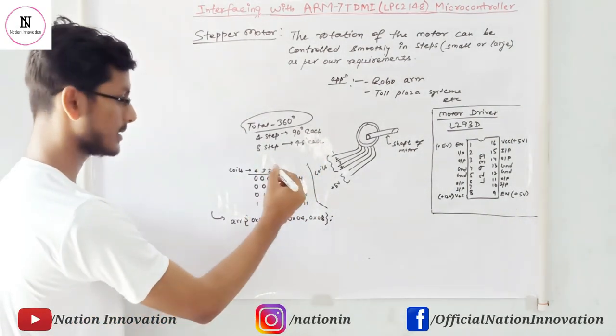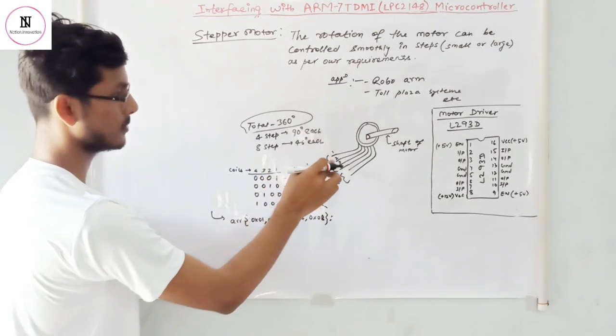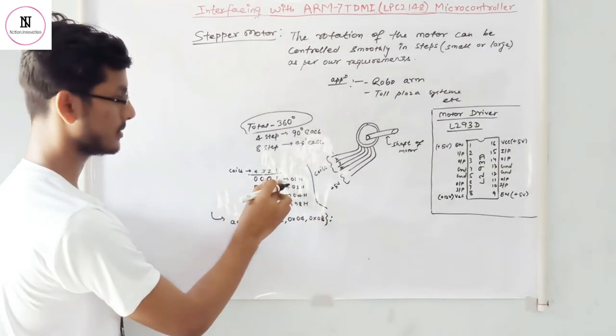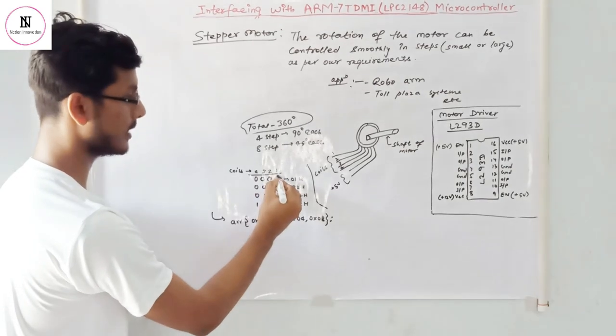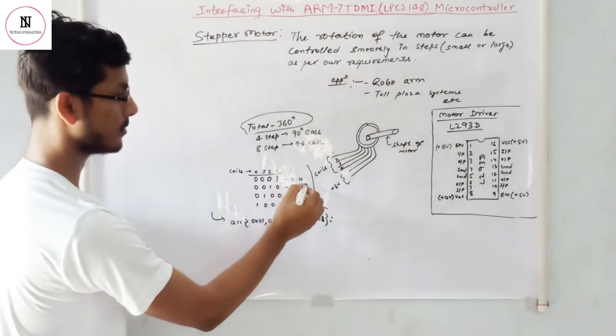And these are the coils, coil 1, coil 2, coil 3 and coil 4. In the first case, we are just giving 5 volts to coil 1. And the hex code will be 01 for that.